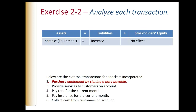By signing a note payable, that liability account increases. So our assets increase and our liabilities increase, which means our equation is in balance. Next, we provide services to customers on account. This means we're going to get the cash in the future. We'll have an accounts receivable — an asset — that increases, and a revenue account, which is part of stockholders' equity, that also increases.